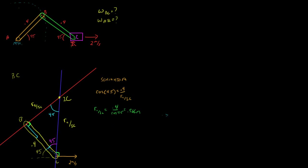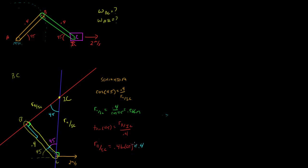Now we can figure out R of B with respect to the instantaneous center. Looking at the same 45-degree angle, this side is opposite and this side is adjacent, so we use TOA. Tangent of 45 equals opposite over adjacent: tangent of 45 equals R of B with respect to the instantaneous center over 0.4. So R of B with respect to the instantaneous center equals 0.4 times tangent of 45. Since tangent of 45 is 1, this equals 0.4 meters.